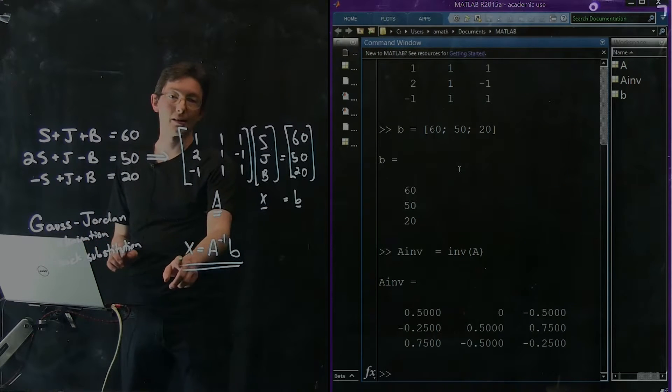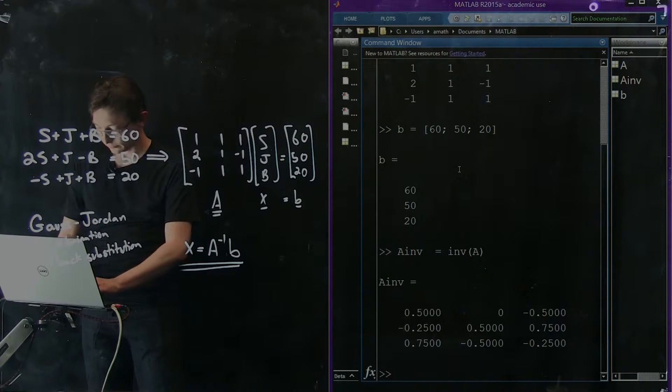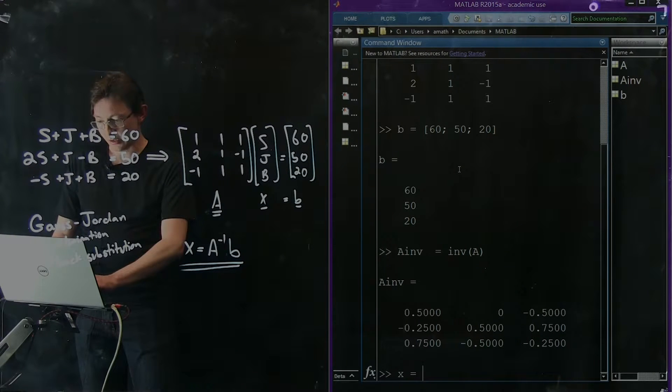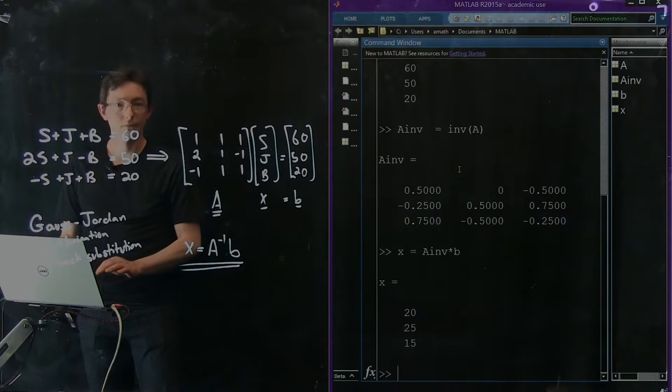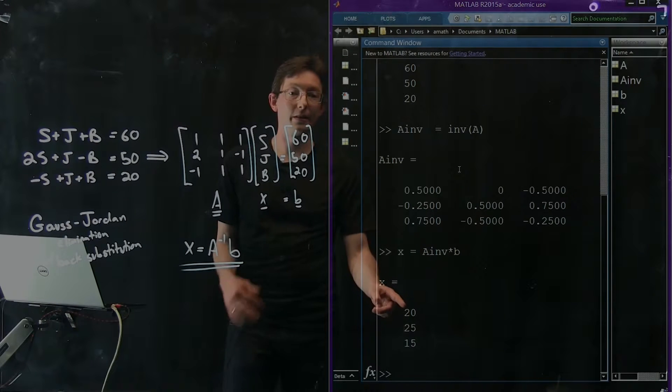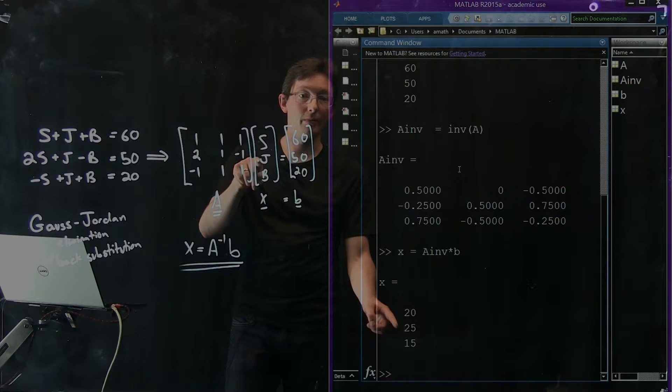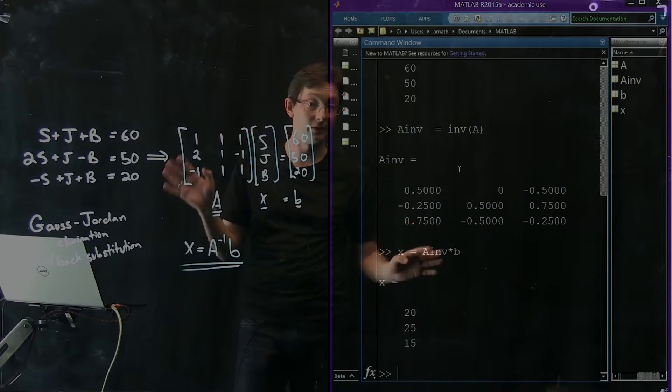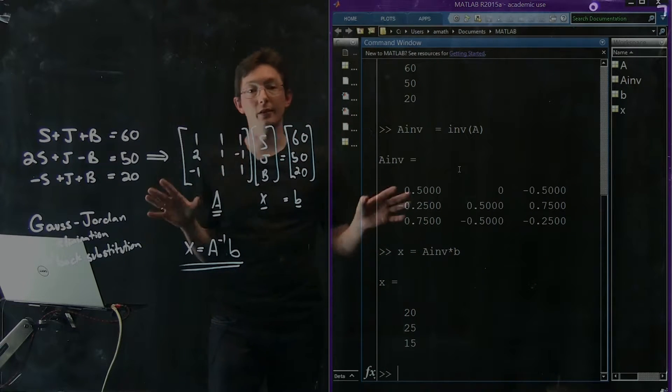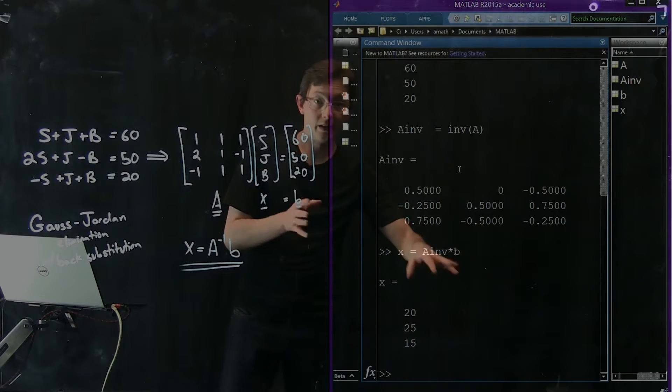My solution x should be A inverse times B. So x equals AINV times B. We see that our solution is correct. The first component, which is Sally's age, is 20. The second component, which is John's age, is 25. And the third component, which is Bob's age, is 15. This is the right answer - we solved it by hand. This is one way to do it: x equals A inverse times B.